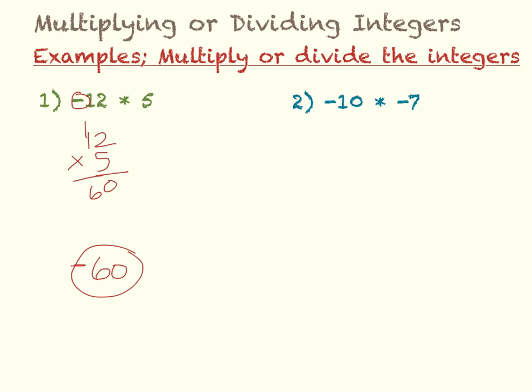And the next one, we have negative 10 times negative 7. So that would be 1, 2 negative signs. So that means our final answer is going to be positive. So I'm just going to take 10 times 7, and that is 70. That's my 10, so just tack on the 0 at the end, 70.